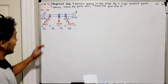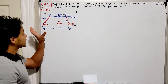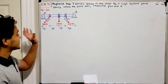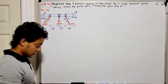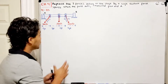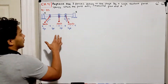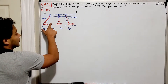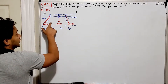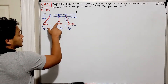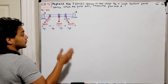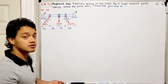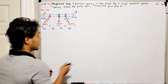We want to take these three forces and replace them with a single resultant force. To do that, we're going to add all the forces in the x and y directions, and our resultant force will be the sum of all three.